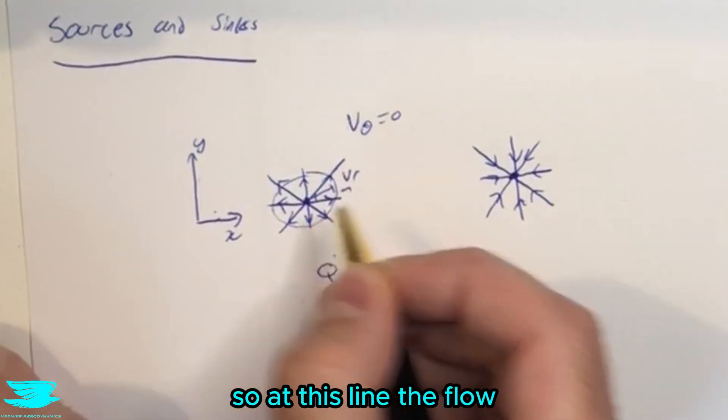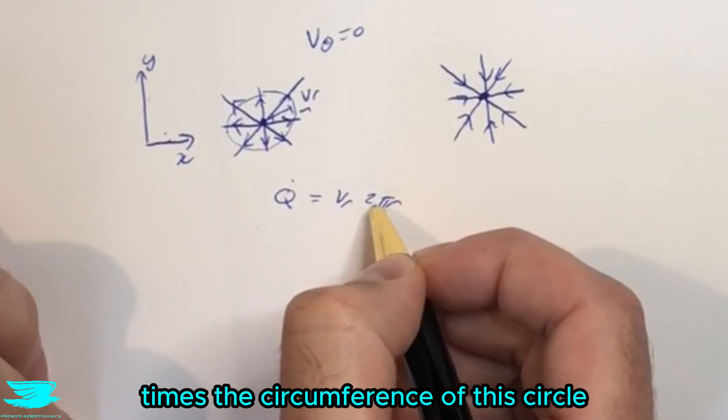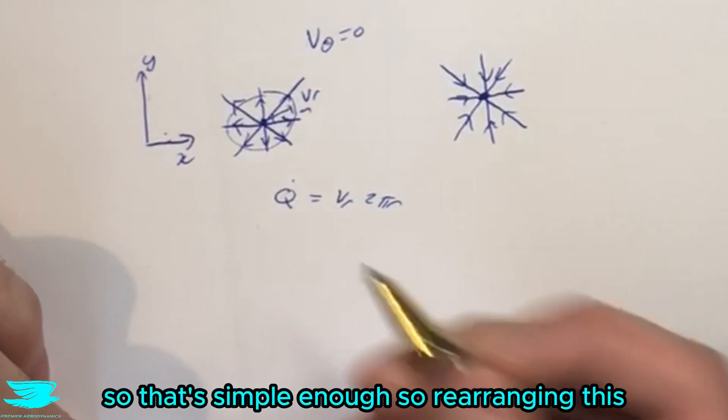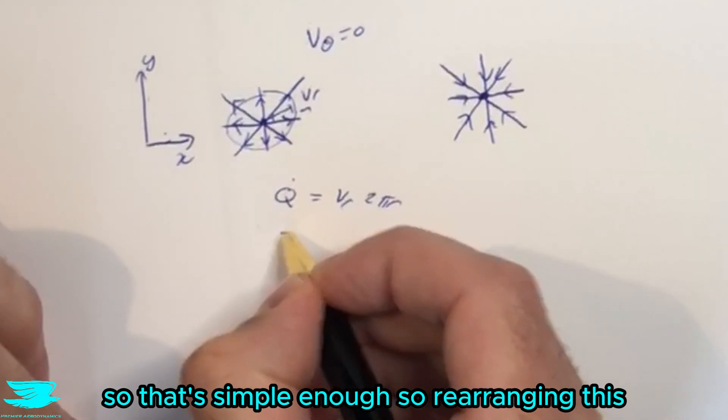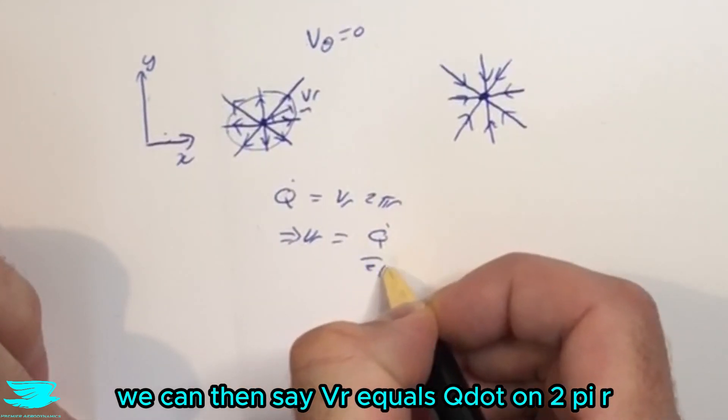So at this line, the flow going through this line is the velocity of this flow times the circumference of this circle. So that's simple enough. So rearranging this, we can then say v_r equals q dot over 2πr.